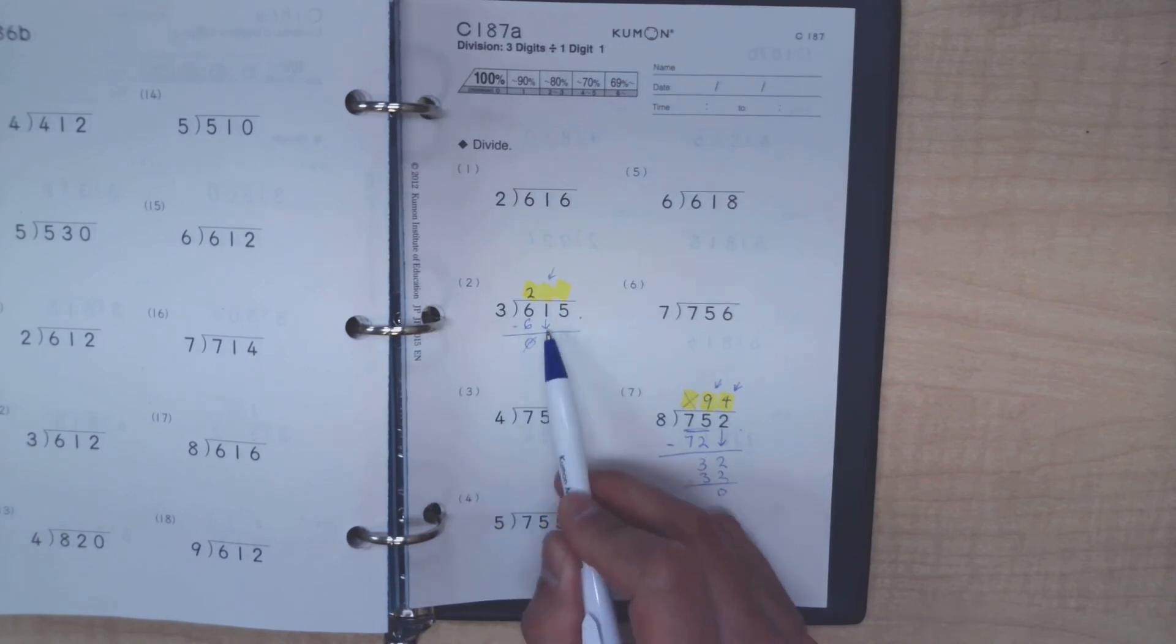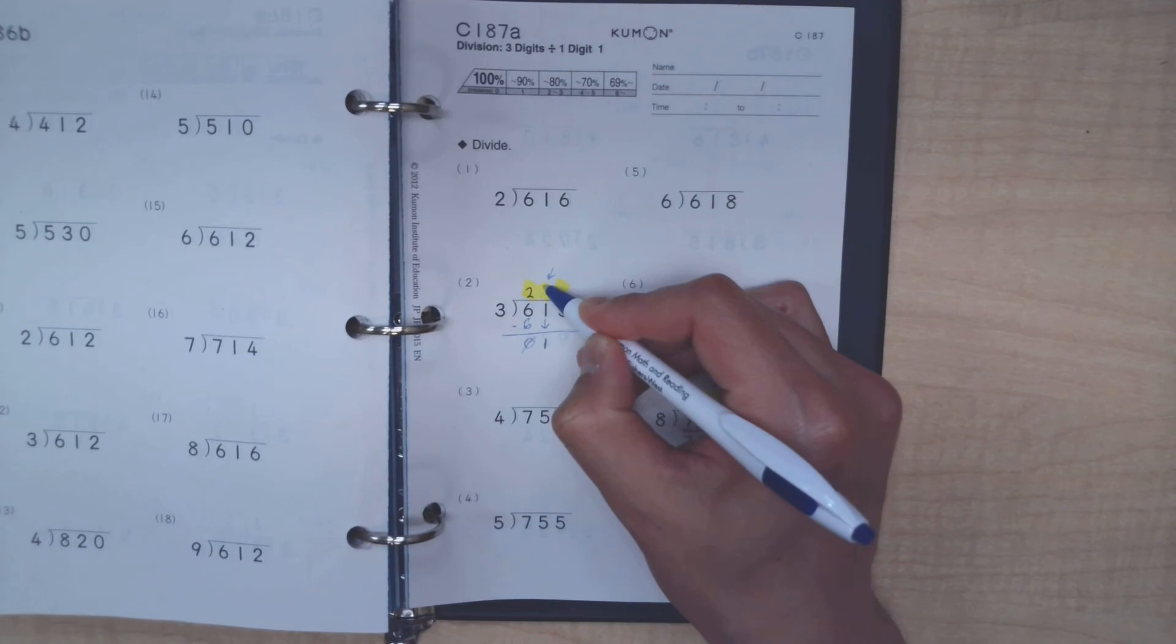Any spot after the first spot cannot be skipped. In this case, if 3 cannot go into a 1, you cannot skip it. Instead, you would have to put a 0 here.